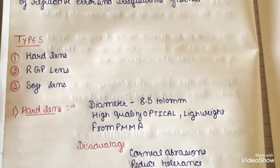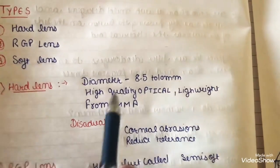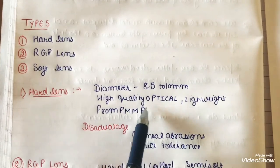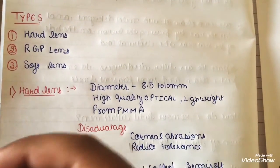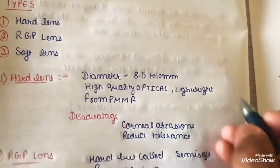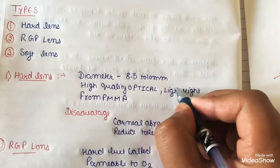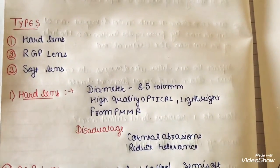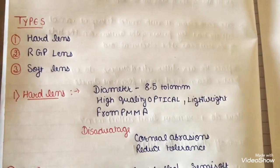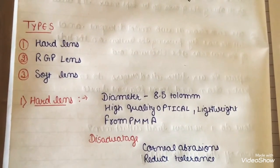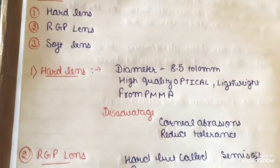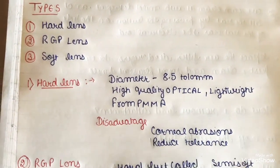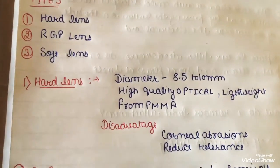Hard lenses have a diameter of 8.5 to 10 mm and high optical quality. They are lightweight, made from PMMA — polymethyl methacrylate material. A disadvantage is that they can cause corneal abrasion and patients have a very low tolerance level.